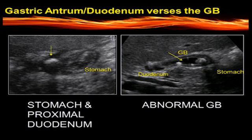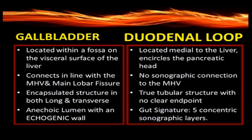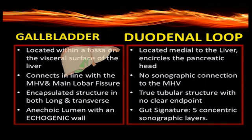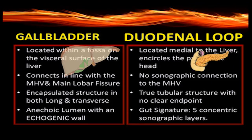So let's compare the two. The gallbladder is located within a fossa on the visceral surface of the liver, and when scanning we should be able to visualize liver on both sides of that true gallbladder structure. The duodenal loop is located posterior to the liver and encircles the pancreatic head. This structure should be found medial to the liver.